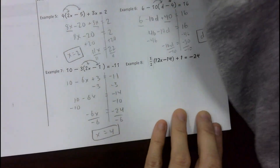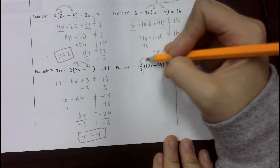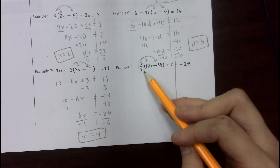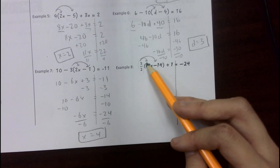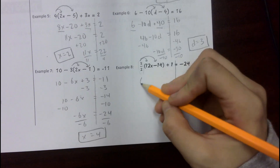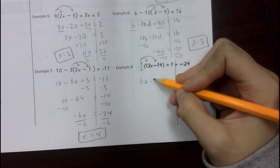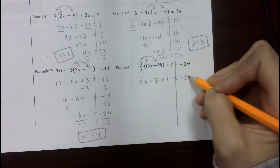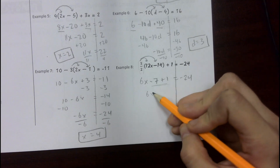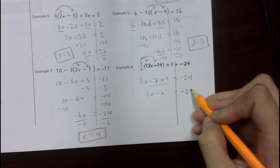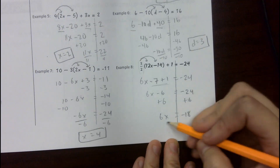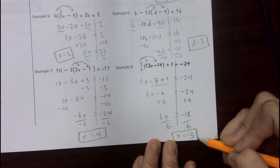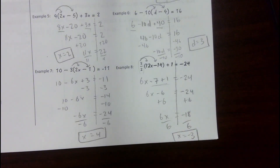Let's do number 8. Even though it has a fraction, it's not that bad. We're going to distribute 1 half — think of 1 half as timesing by 1 and dividing by 2. So 12 divided by 2 is 6, giving 6x, and 14 divided by 2 is 7 but it's negative, so negative 7. Plus 1 equals negative 24. Combine like terms: 6x minus 6 equals negative 24. Add 6 to both sides: 6x equals negative 18. Divide by 6: x equals negative 3. Lots of steps, lots of negatives, but all the same process — just keep track of your negatives and like terms.